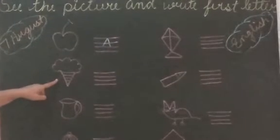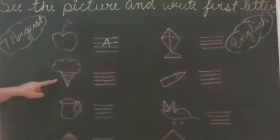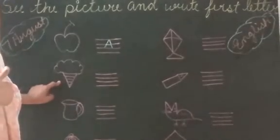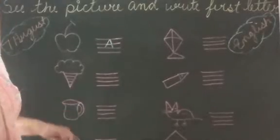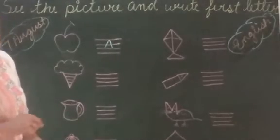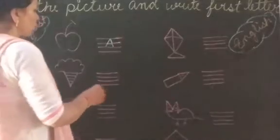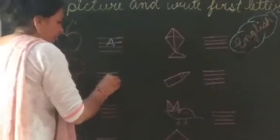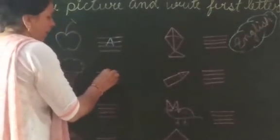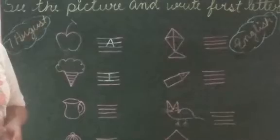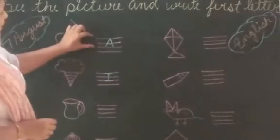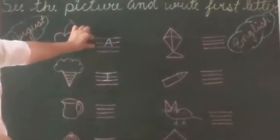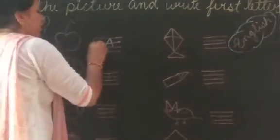Now see which picture is this? This is your favorite, lovely ice cream. So here we write capital I. Capital I. Why? When we write each and every letter, we touch all these three lines. Every letter is complete in these three lines.